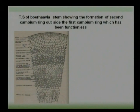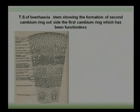In the transverse section of the Borhevia stem, the formation of a second cambium ring is visible. The second cambium ring is formed just outside of the first cambium ring.